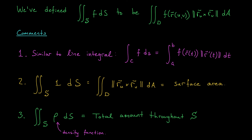We've just come up with a new type of integral: a surface integral. The definition is very similar to the one we had for line integrals. If we wanted to compute the line integral along a curve C of some scalar field f, that was given by plugging in the parametrization and multiplying by the norm of r′, where r′ is the tangent vector along curve C, then integrating over all values of parameter t. The same is true here: we're plugging in a parametrization for our surface, multiplying by the norm of r_u cross r_v — which are tangent vectors to our surface — and integrating over all possible values of our parameters.